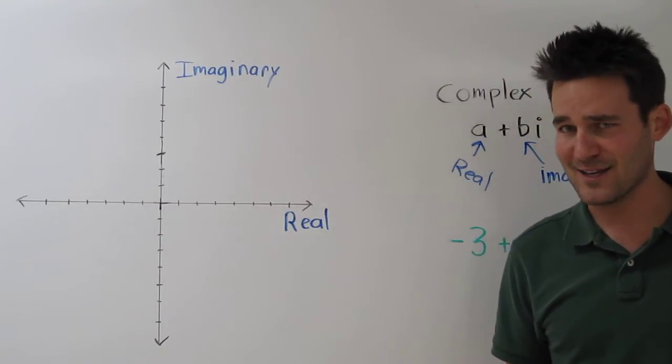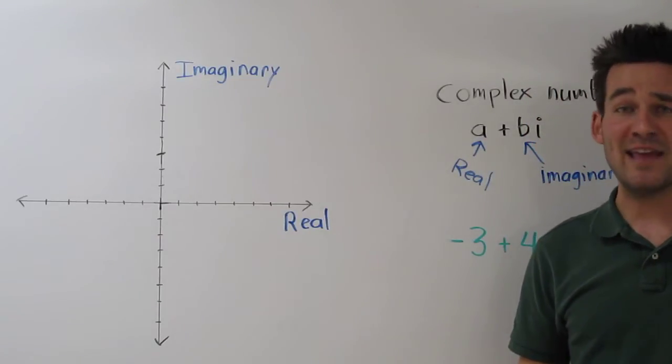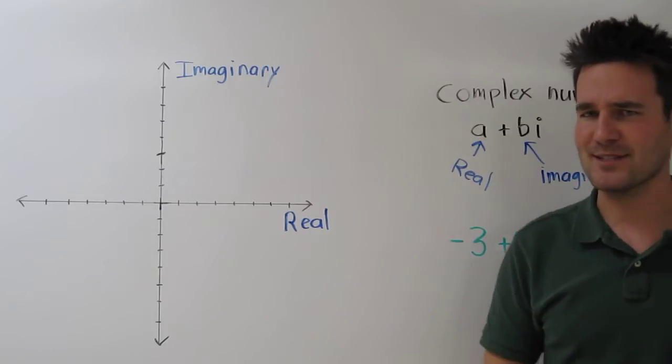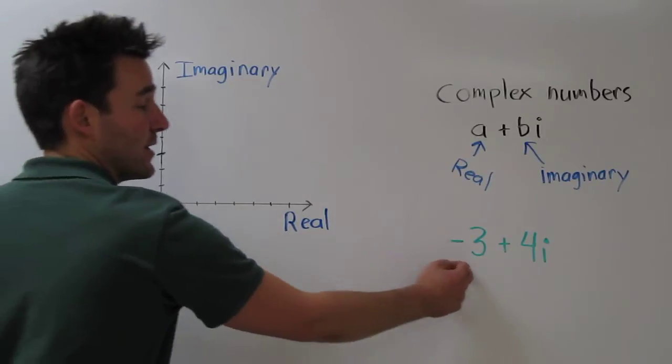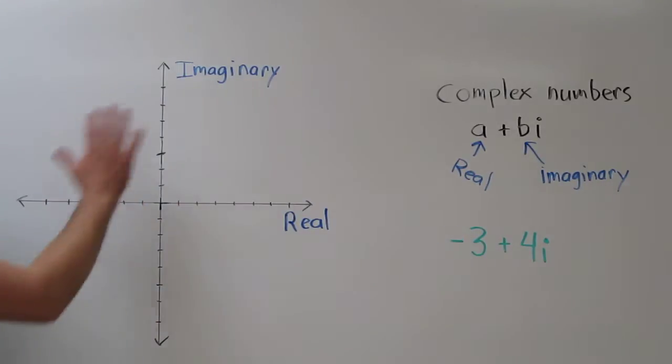Now that we're comfortable plotting complex numbers, let's talk about how to find the absolute value of a complex number. In the last video, we learned how to plot this complex number. We look at the real and the imaginary part, and plot it on the complex coordinate plane.